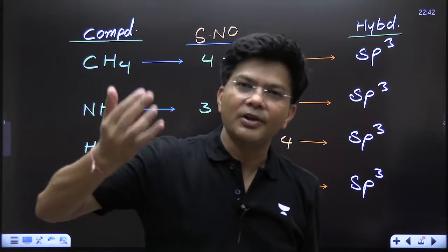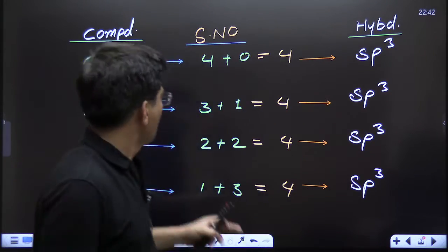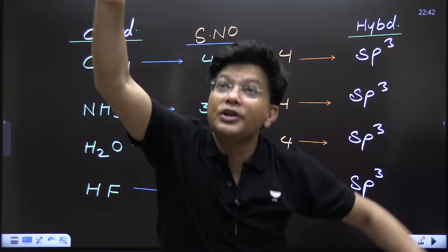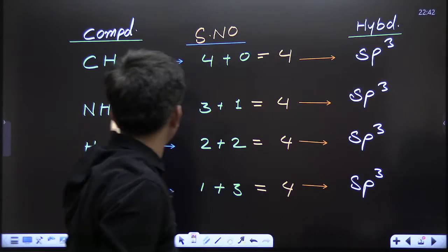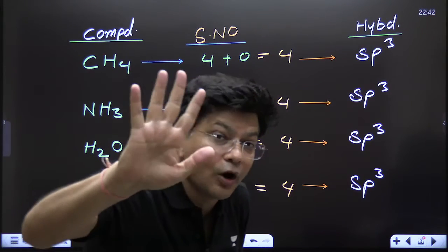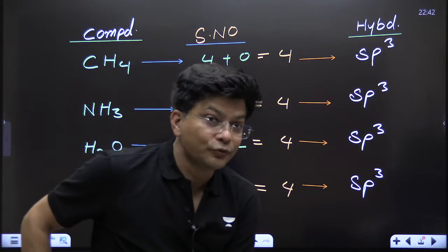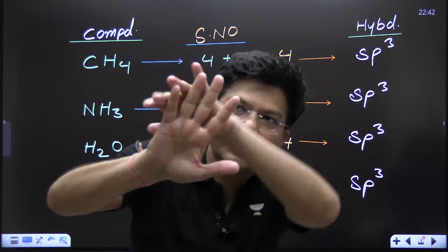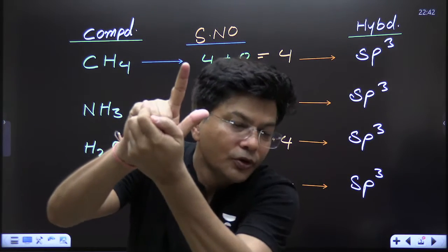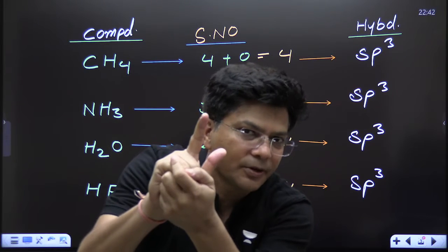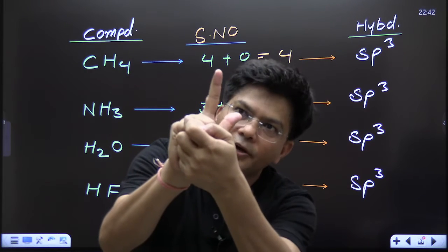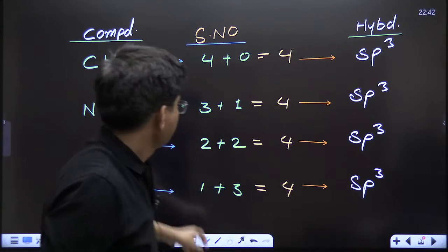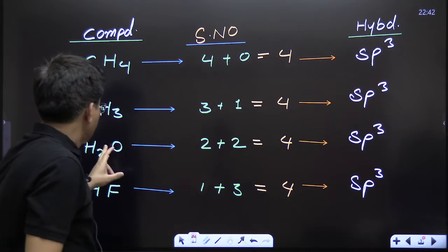Now nitrogen — 'newspaper is awesome,' so nitrogen has five electrons. Out of those five electrons, it has formed three bonds: five minus three = two electrons left, meaning one lone pair. Three sigma bonds + one lone pair = four → sp³ hybridization.